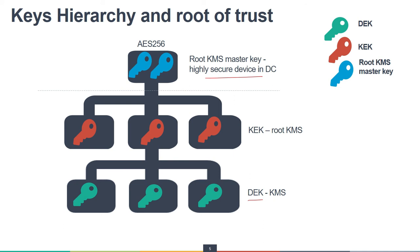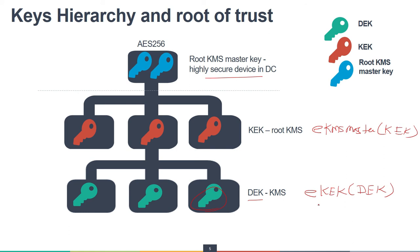The KMS keys are wrapped with the KMS master keys stored in the root KMS. The DEKs are encrypted with the KEKs, and the KEKs are stored in the root KMS encrypted under the master keys. So the hierarchy is: the KMS master key encrypts the KEKs, the KEKs encrypt the DEKs, and the DEKs encrypt the customer data. The KMS master key is stored in a secure device in the physical data center at the back end. This is how the key hierarchy works and root of trust is maintained in Google Cloud.